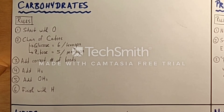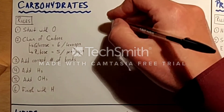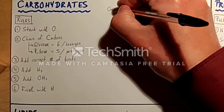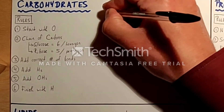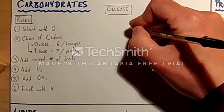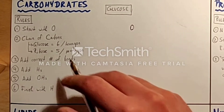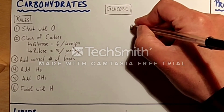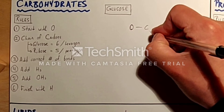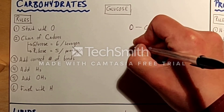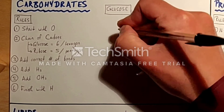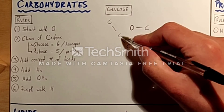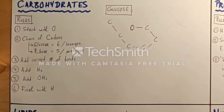The first one we are going to draw is glucose. We will start with an oxygen. Now remember that glucose is going to be a hexagon shape with six carbons. Starting from the oxygen: one, two, three, four, five, six. Note that I have made a hexagon shape but that this hexagon has a tail — that is really important.